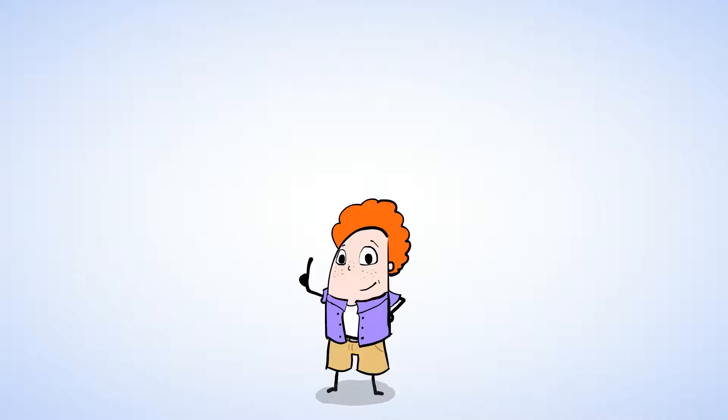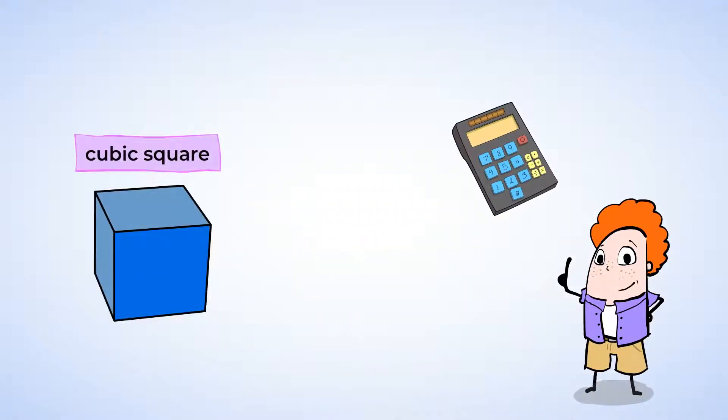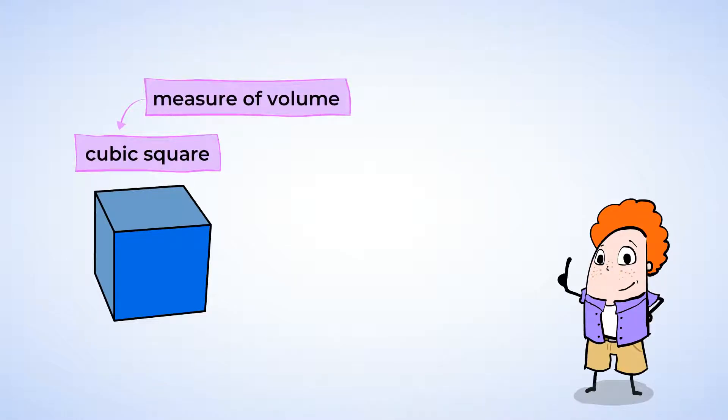And now, let's take a look at how to calculate volume. All right, here is one cubic square. And this can be a measure of volume. Notice that there is a three-dimensional shape. It has width, length, and height. Now picture this.